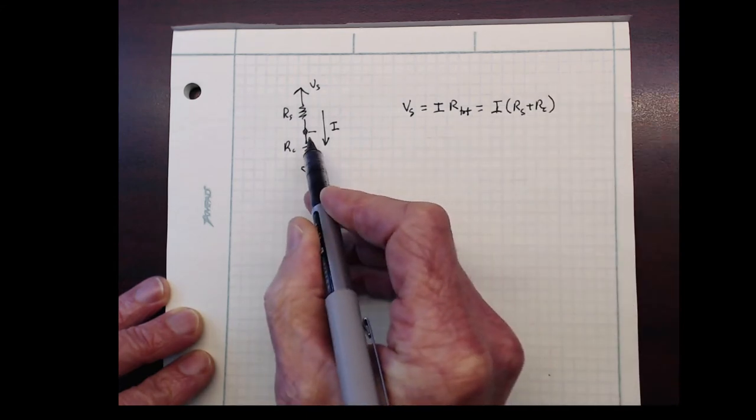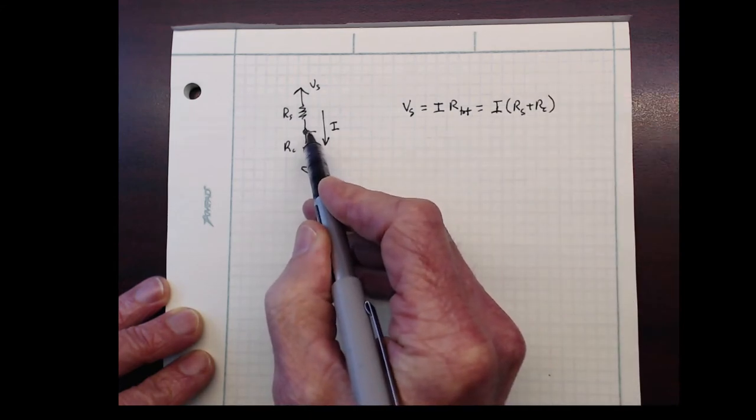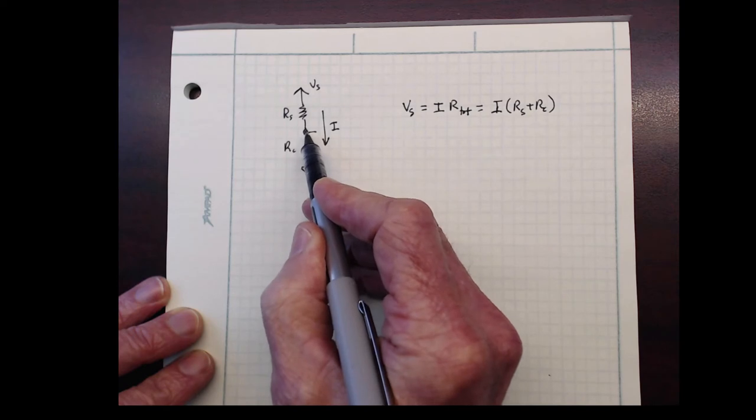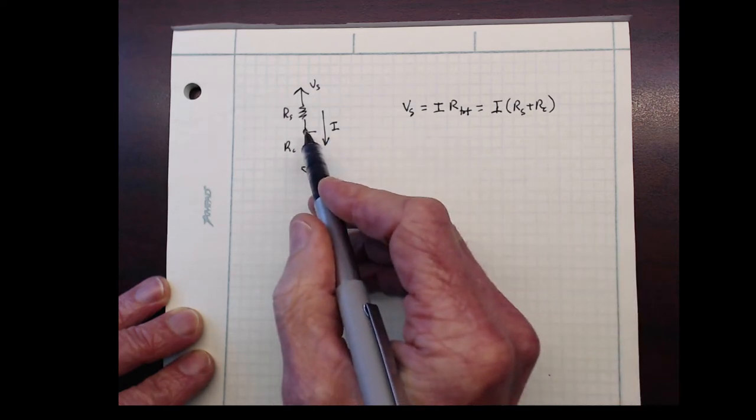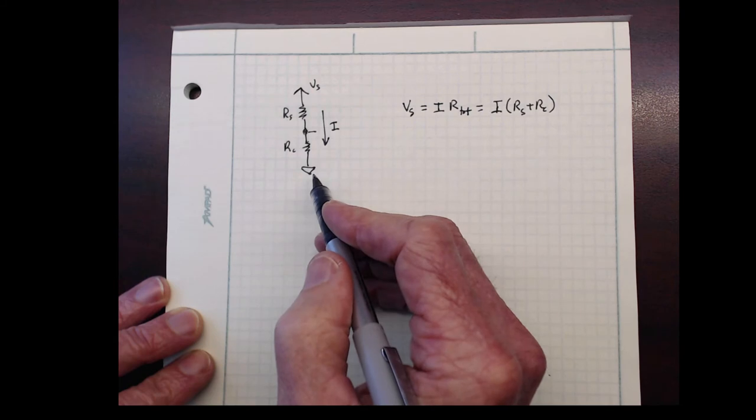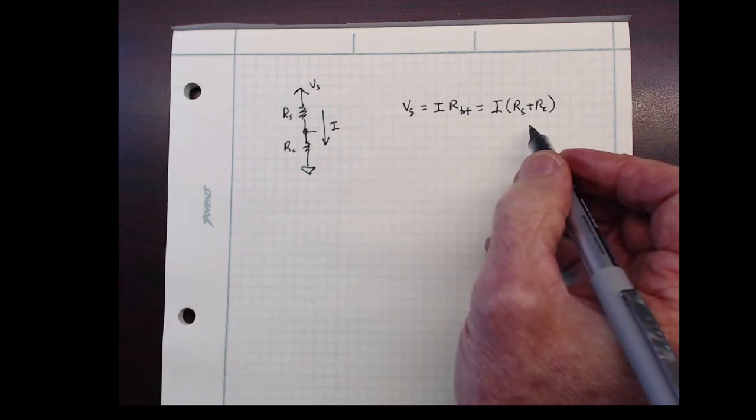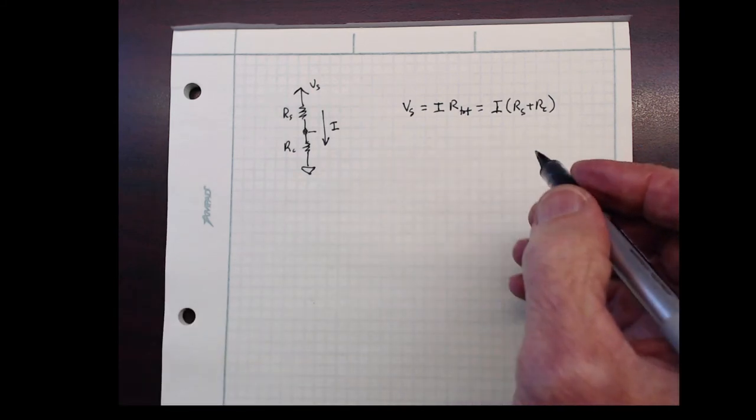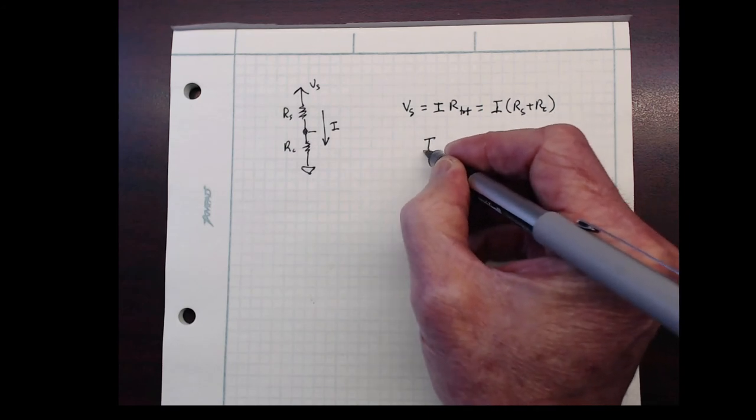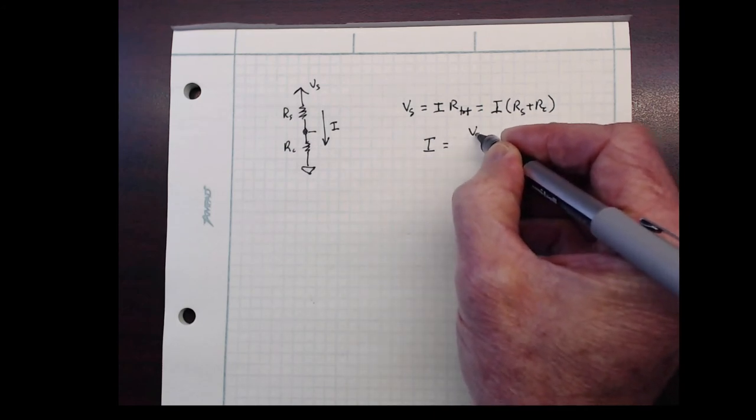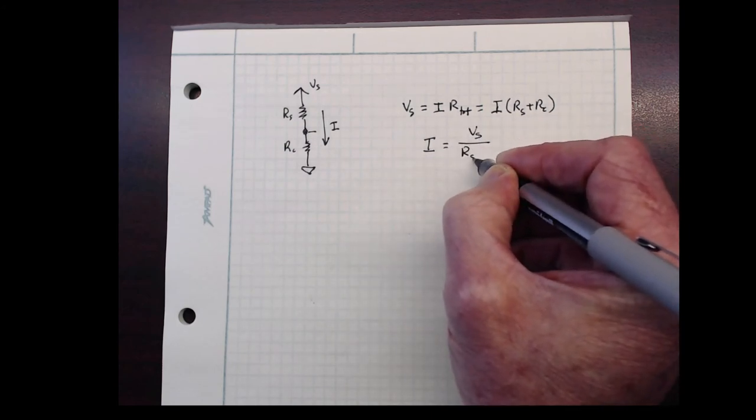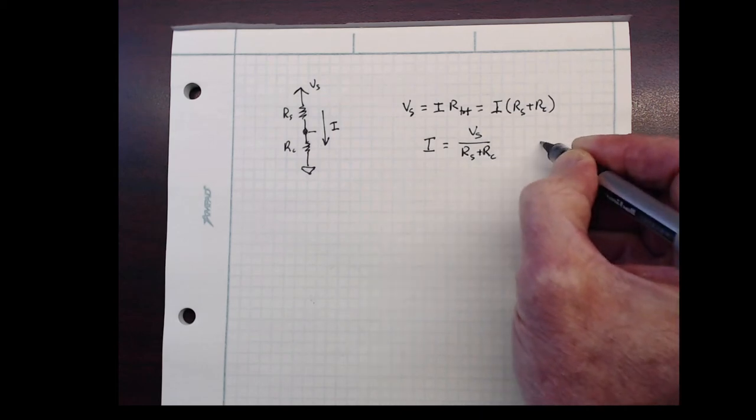Again, this is true because even though I'm making a measurement and touching another electrical circuit here, making another connection, the current only flows to ground. So I have a formula here that allows me to say the current, the total current, is V sub S divided by R sub S plus R sub C. I'll call that equation one.